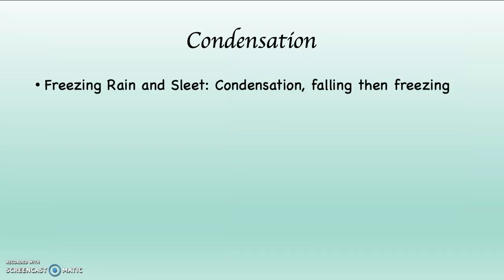Freezing rain and sleet — although these are different, they're very similar to each other. To make freezing rain or sleet, what happens is condensation, falling, then freezing. Notice how this is different from hail, where it's condensation, freezing, then falling. With freezing rain and sleet it's condensation, falling, then freezing, which means there's an inversion layer because the air above is warmer than the air below. As the rain falls, it passes through a freezing layer of air or hits a frozen ground surface. If it freezes on the ground or on an object, that's freezing rain. If it freezes in the air on the way down, that's sleet.